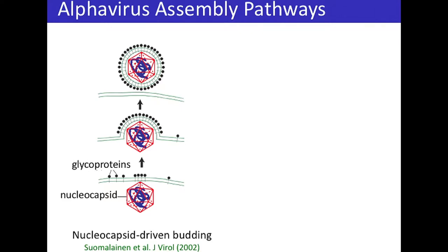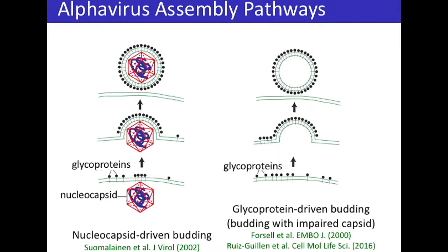This is a little controversial because several works show that you don't actually need the nucleocapsid to get budding. There are works where capsid protein is either impaired or completely knocked out and budding still occurs — in fact, in one recent work they saw budding of infectious particles. This raises questions: what is the relative importance of glycoproteins versus the nucleocapsid in driving this process, and why does the virus even bother with the nucleocapsid if you can get infectious particles without it?